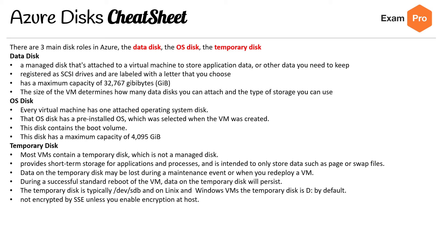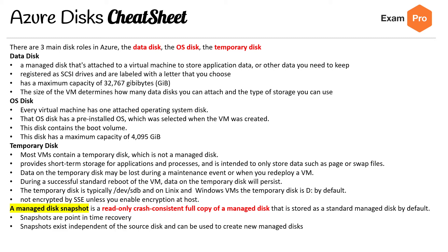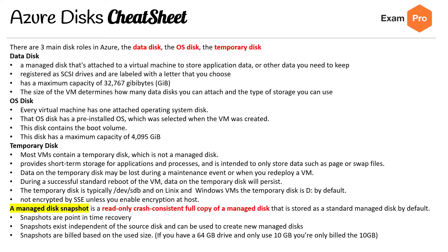Moving on to managed disk snapshots. A snapshot is a read-only, crash-consistent full copy of a managed disk that is stored as a standard managed disk by default. Snapshots are point-in-time recovery copies that exist independent of the source disk and can be used to create new managed disks. Snapshots are billed based on used size — if you have a 64 gigabyte drive with only 10 gigabytes used, you're only billed for 10 gigabytes. You can see the size of your snapshot by looking within the Azure usage report.